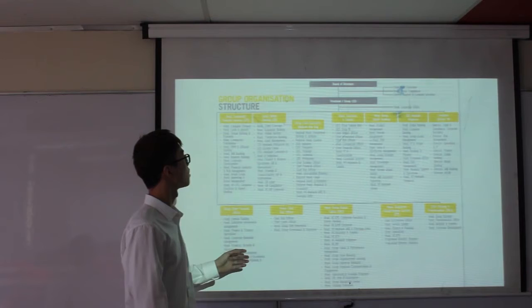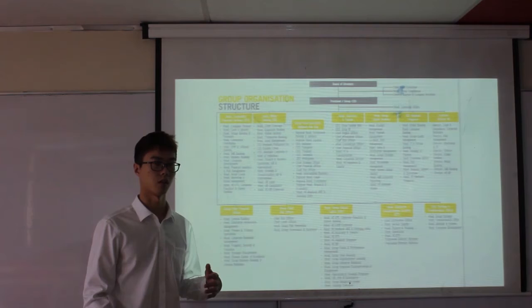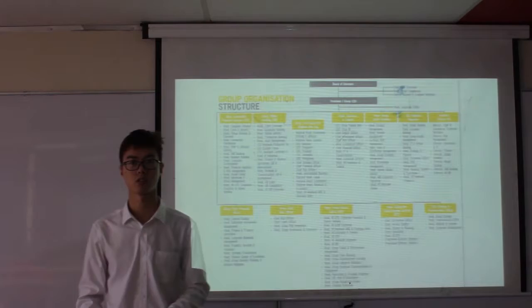Now let's talk about the structure of Maybank. Maybank's structure is a flattened structure because it uses an information system. Now let my partner talk about the next part.